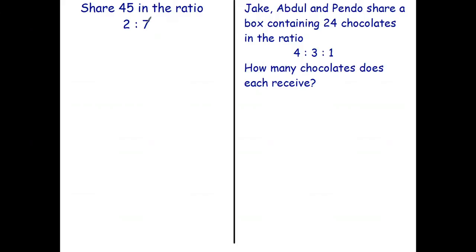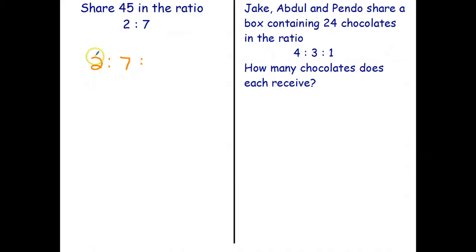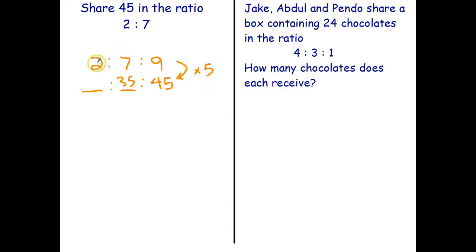Here's the way that I like to do questions like this — I think it's a quite easy way. First thing I'm going to do is write down the ratio two to seven. Now, that 45 doesn't go under the two and it doesn't go under the seven. What you have to do is say: there are two parts here, seven parts there, nine parts altogether. That 45 is the total, so it goes under the nine. Nine times what gives you 45? The answer is 5.